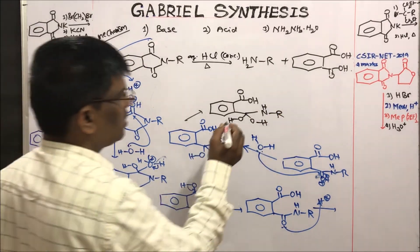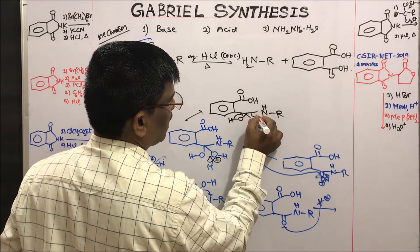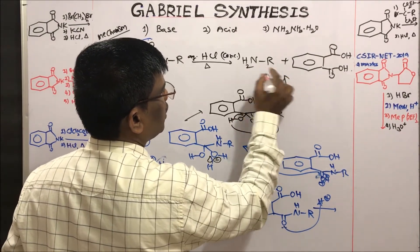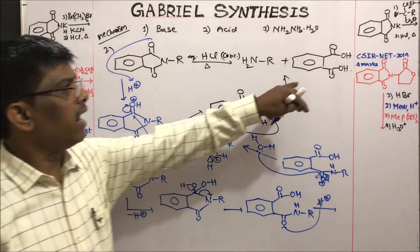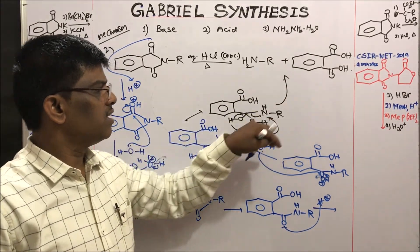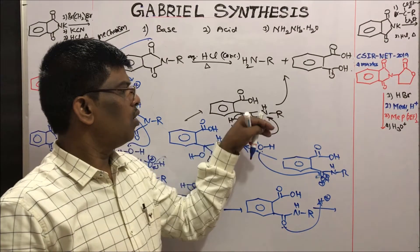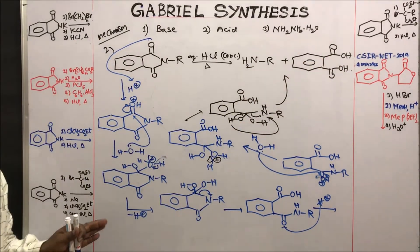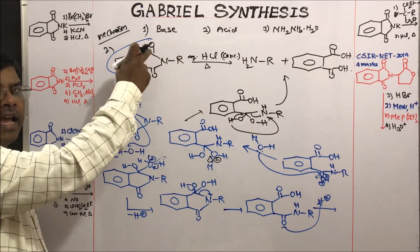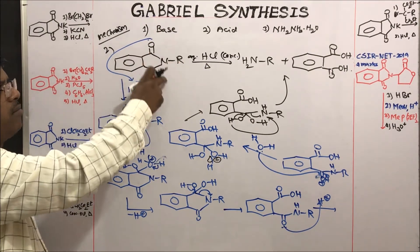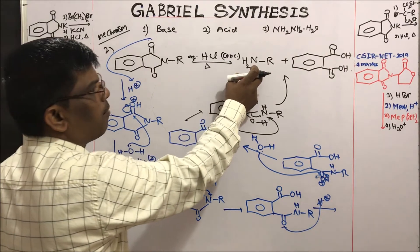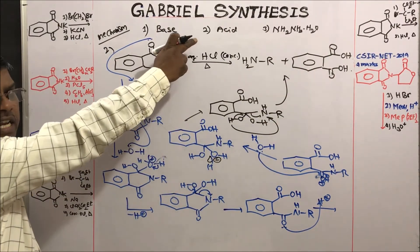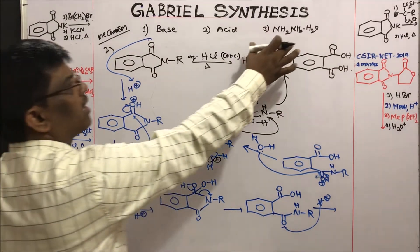So this gives the amine and phthalic acid — NH₂ and R, and this side double-bond O, OH, the acid group. This is how acid hydrolysis of N-alkylated phthalimide gives free amine, the primary amine, and phthalic acid. This is acid-mediated hydrolysis.